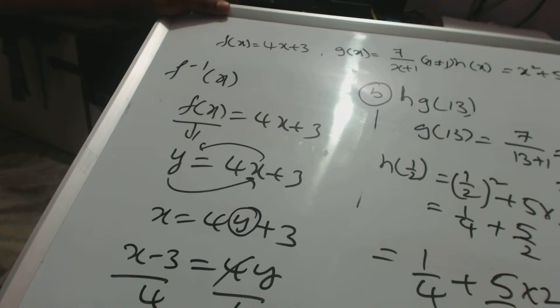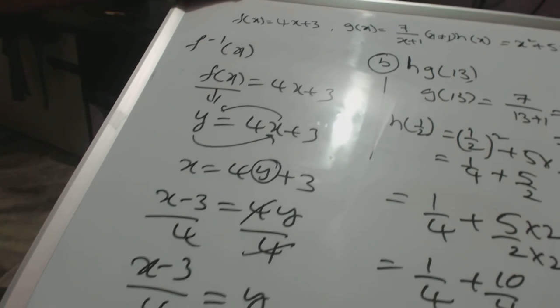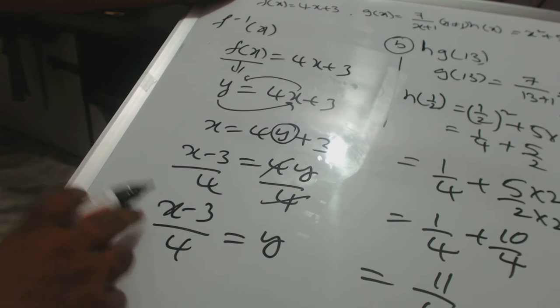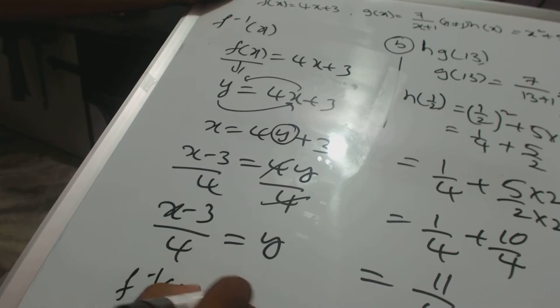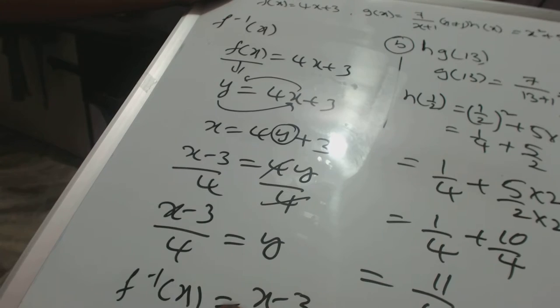x minus 3 by 4, that is equal to y. So this is f inverse of x. F inverse of x is equal to x minus 3 by 4.